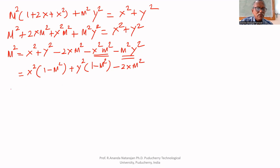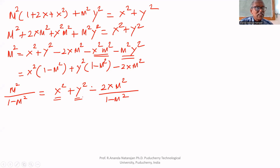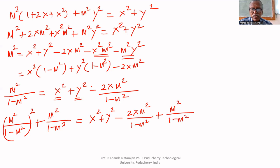Dividing both sides by (1 − M²): X² + Y² − 2X·M²/(1 − M²) = M²/(1 − M²). Since there are X² and Y² terms, this equation can be shown to represent a circle. So we deliberately add M²/(1 − M²)² to both sides to complete the square.